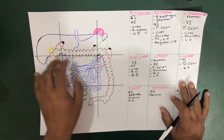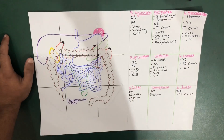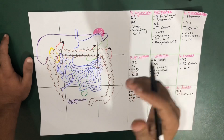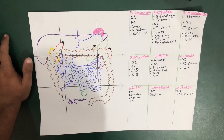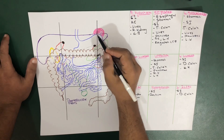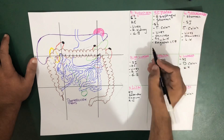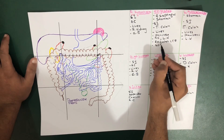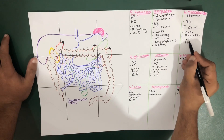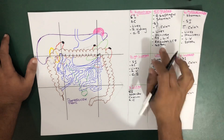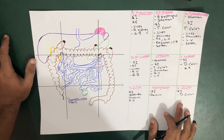Now let's move towards the spleen. The spleen occupies two spaces only. The spleen is located on the surface above the stomach. Spleen occupies the epigastric region and the left hypochondriac region. In the diagram, spleen is shown in light pink color.